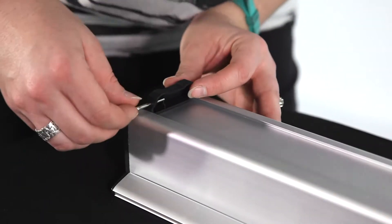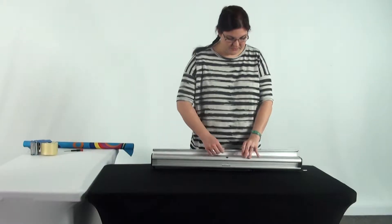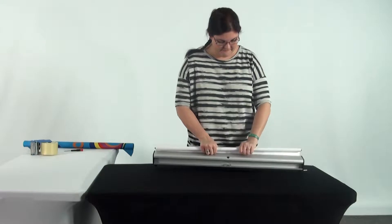Start off by removing the locking pin located on the bottom of the base and set aside. Now, roll your current graphic around the top of the clamping rail. This will help to prevent damage to the banner.